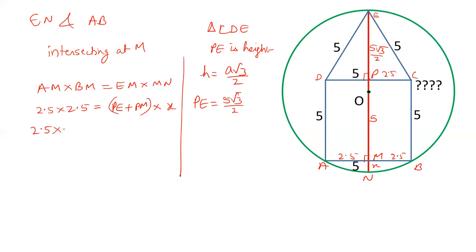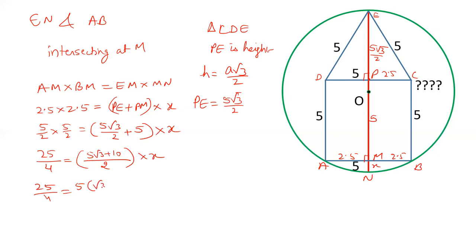Now let's put the value here. 2.5 into 2.5 can be written as 5/2, 5/2. The value of PE we have just calculated 5√3/2 and the value of PM is 5. We have to calculate X. This is 25/4. LCM is 2, so 5√3 + 10 into X. Take 5 common. So this will be (√3 + 2)/2 into X. This is cancelled out. So this is 5/2. We have to calculate X. X will be 5/2 and √3 + 2 will be in denominator. Multiply this by (2 - √3) and (2 - √3). Multiply and divide. This is known as rationalizing the denominator.